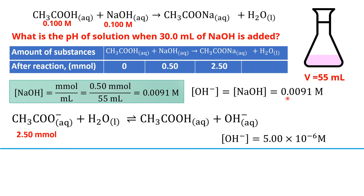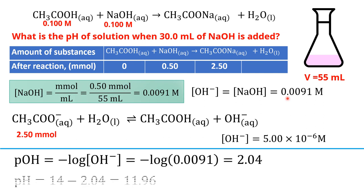Taking this hydroxide concentration to calculate pOH gives pOH = 2.04, which makes pH = 14 − 2.04 = 11.96.